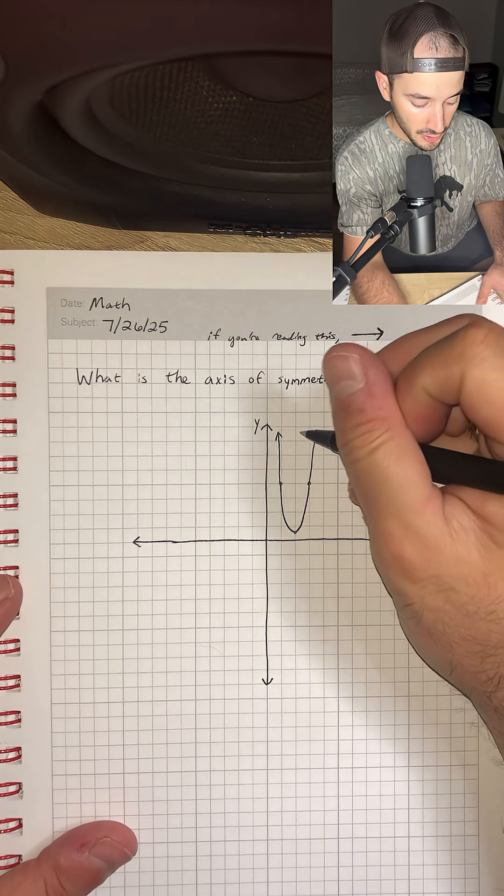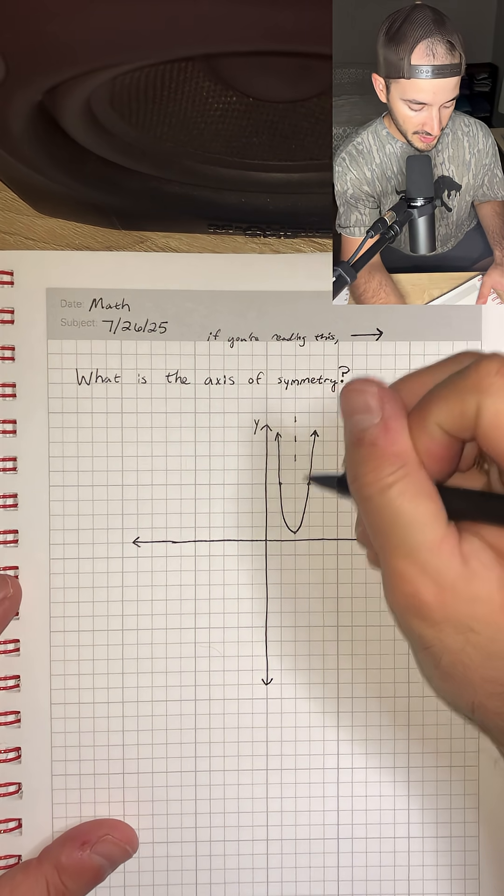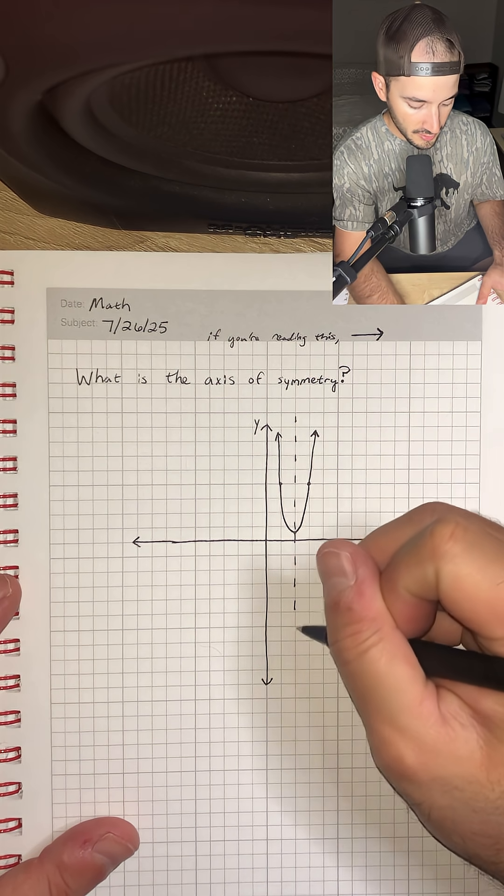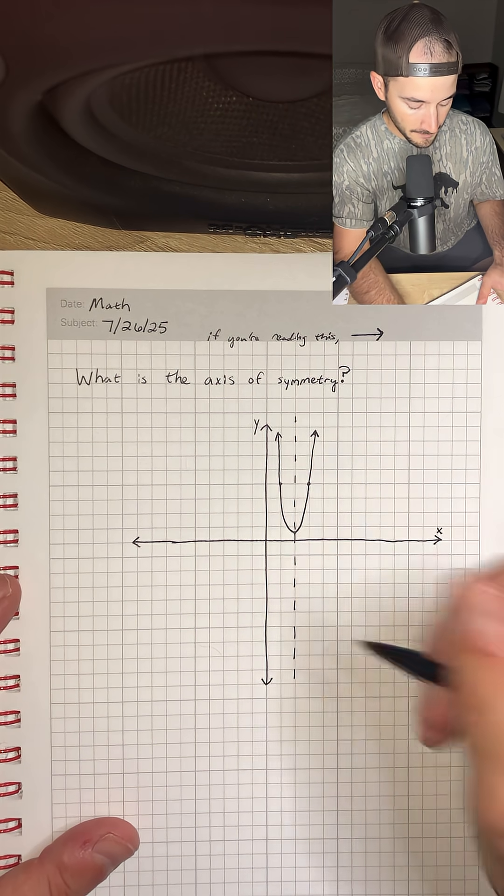So if I were to draw a line right down the middle of this parabola to make it symmetrical, that would be our axis of symmetry.